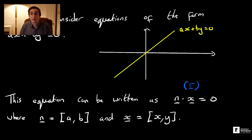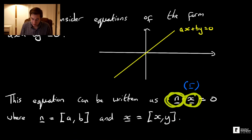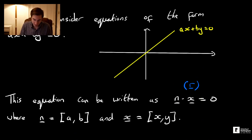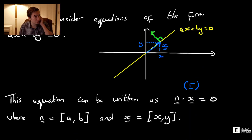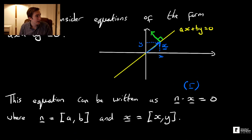From our understanding of the scalar product, if n dot x equals 0 for any position vector x, it must mean that n is orthogonal to all position vectors x on this line. So if I think of a line through the origin, I can take a position vector x pointing to a point on the line, and the normal vector n — drawn in a different colour — is perpendicular to that vector. This captures the idea that we can encode a line in R2 via its normal vector, which encodes its orientation.